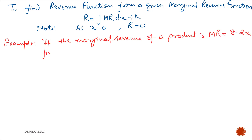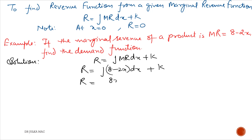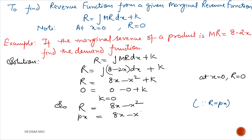For example: If the marginal revenue of a product is MR equals 8 minus 2x, find the demand function. Revenue equals integration of marginal revenue with respect to x plus k. Replace marginal revenue by 8 minus 2x and after solving we get R equals 8x minus x squared plus k. At x equal to 0, revenue equals 0, so k equals 0. Therefore revenue equals 8x minus x squared. Since revenue equals price times quantity, px equals 8x minus x squared. Dividing both sides by x gives p equals 8 minus x, which is the required demand function.